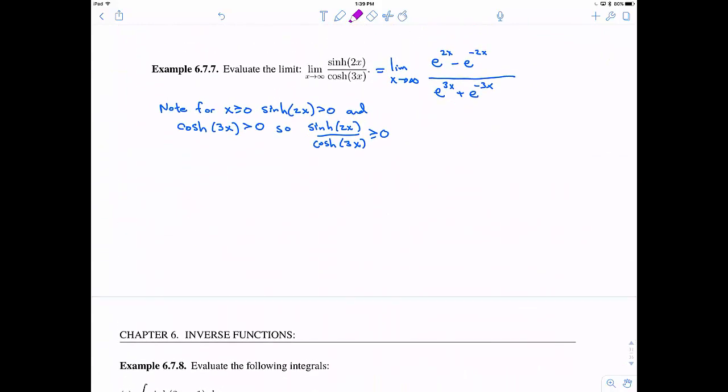So therefore, looking at our function here, this e to the 2x minus e to the negative 2x divided by this e to the 3x plus e to the negative 3x. Right? We know this thing is going to be greater than or equal to 0.